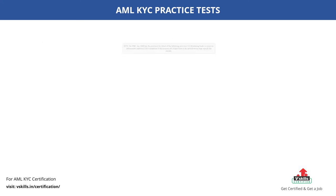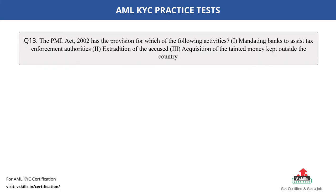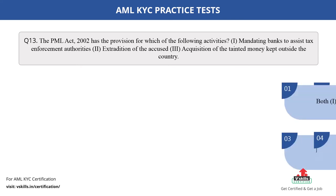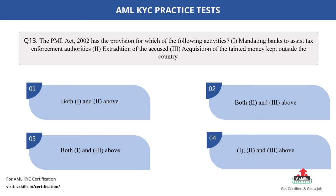Question number 13. The PML Act 2002 has the provision for which of the following activities? 1. Mandating banks to assist tax enforcement authorities; 2. Extradition of the accused; 3. Acquisition of the tainted money kept outside the country. The options are: A. Both 1 and 2 above; B. Both 2 and 3 above; C. Both 1 and 3 above; D. 1, 2 and 3 above. The correct answer is option D.